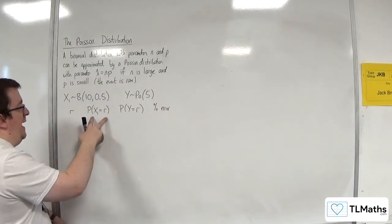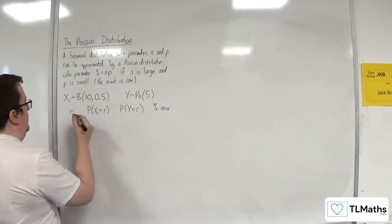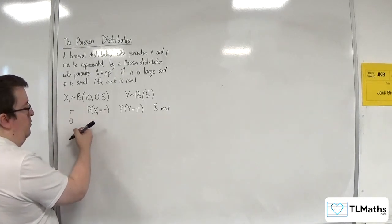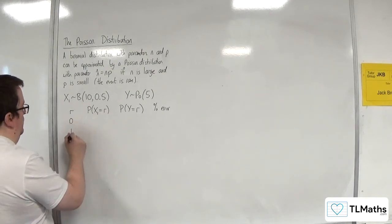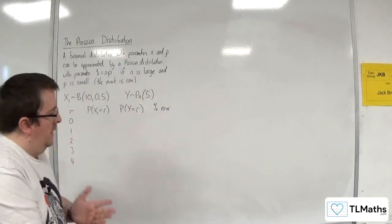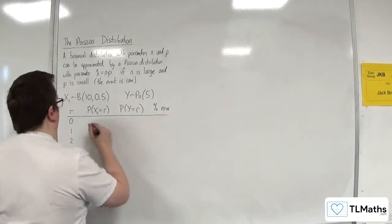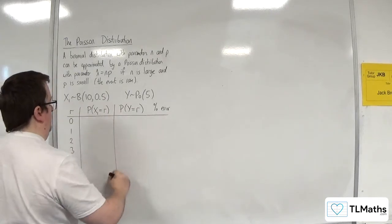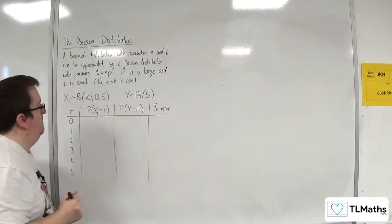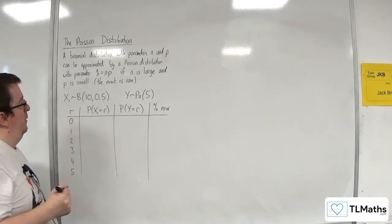Remember, this is the exact one. This is my approximation. So I'm going to have 0, 1, 2, 3, and 4. I'm going to go up to 5, actually. So let's work out each of those probabilities.